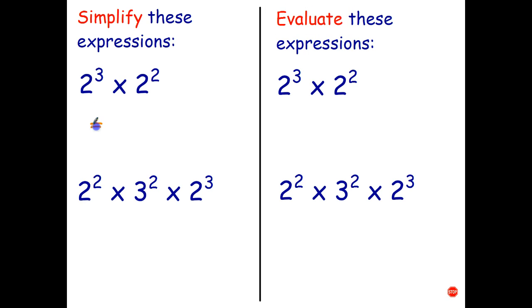So to simplify means leave the answer as a power. So that's going to be 2 to the power of 3 plus 2, or 2 to the power of 5. So we don't actually work out what that equals, but if we're asked to evaluate that, we can get 2 to the power of 5 first.